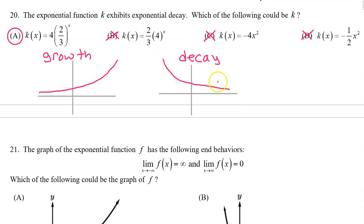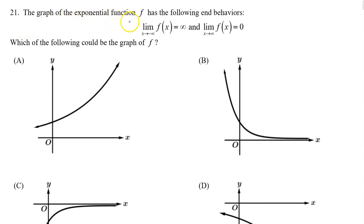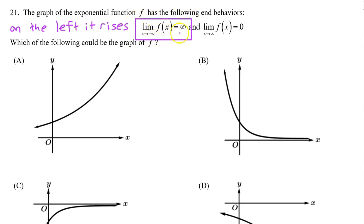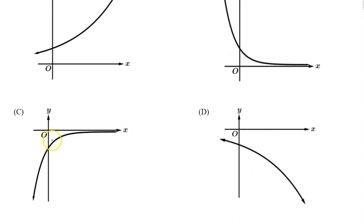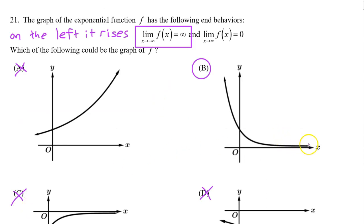Number twenty-one: the graph of the exponential function f has the following end behavior: the limit as x approaches negative infinity of f of x equals infinity, meaning on the left f of x rises towards infinity. The answer cannot be A because f of x approaches zero on the left. The answer cannot be C because as we go towards the left, f of x falls. The answer cannot be D because on the left the graph approaches zero, not infinity. So the answer is B — the only graph where the limit as x approaches negative infinity is infinity, and also the limit as x approaches positive infinity of f of x is zero.